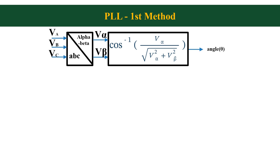Here I will explain two methods of PLL implementation. This is the first method and the simplest method for a 3-phase grid connected inverter, and you can see this method explained in many literatures. Here 3-phase ABC voltages are first converted into 2-phase alpha-beta voltages. From the alpha-beta voltages, taking the inverse cosine of Vα divided by the root of Vα squared plus Vβ squared will give us the angle information. And from this angle information, we generate the current reference for active and reactive power.